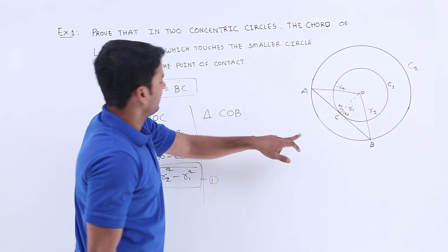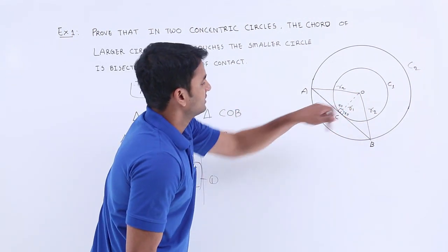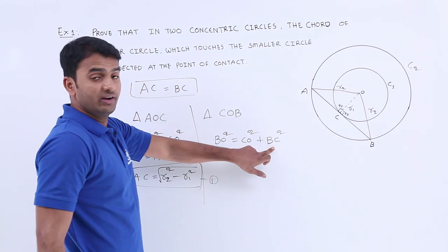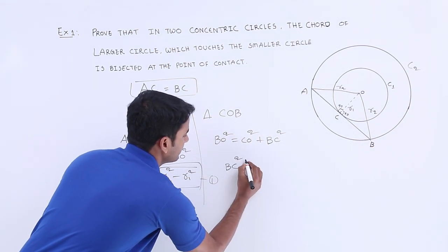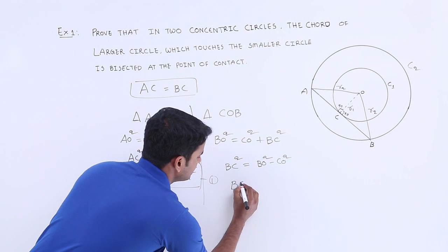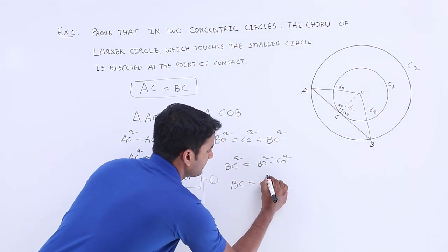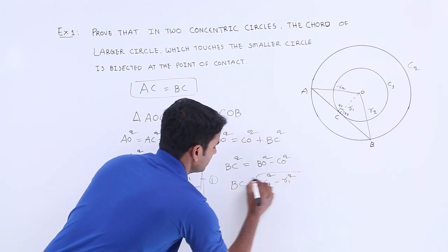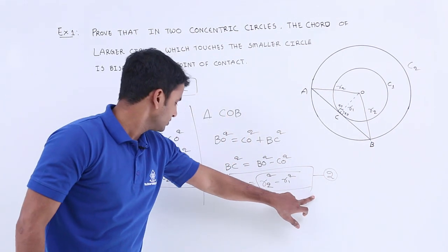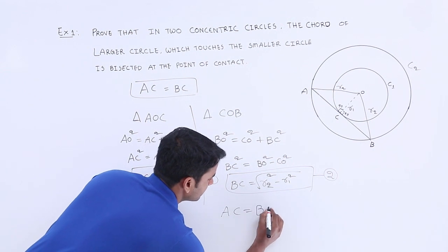For the second triangle COB, we write: BO² = CO² + BC². Rearranging to find BC: BC² = BO² − CO², which is r2² − r1². Let us consider this as equation number two. Observing equations one and two, both are equal, so we can conclude that AC is equal to BC.